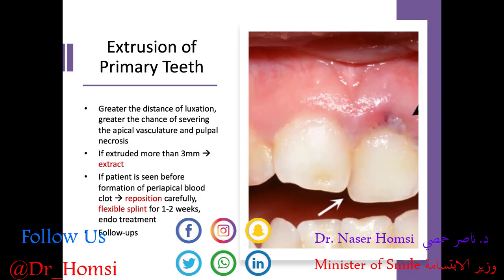What about extrusion of the primary tooth? That means the tooth has been partially extruded out from the socket. The greater the distance of luxation, the greater the chance of severing the apical vasculature and having pulpal necrosis. If the tooth is extruded more than three millimeters, we recommend extracting and maintaining space. But if the patient is seen before formation of a periapical blood clot, we can reposition the tooth carefully, place a flexible splint for about one to two weeks, and perform any necessary endodontic treatment. Follow-ups are recommended as well.